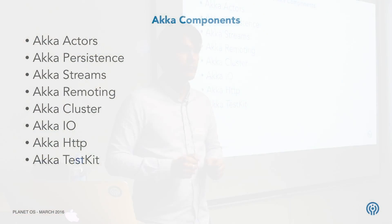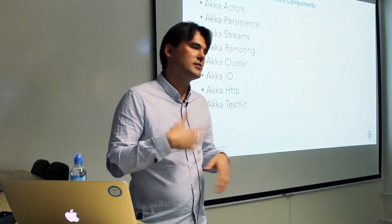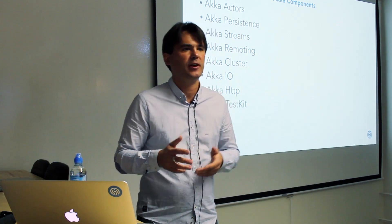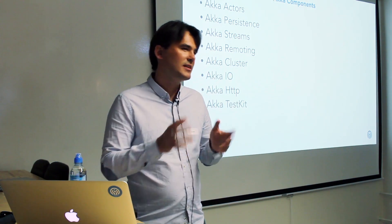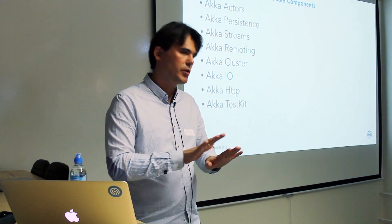Akka remoting is a way to run actors on multiple machines and make them communicate with each other in a way that is almost the same as actors communicating within one JVM. It's very easy to start a child actor on a different machine and exchange messages. Of course, there are details you have to think about because the network can drop messages, but at some level the approach is very similar.